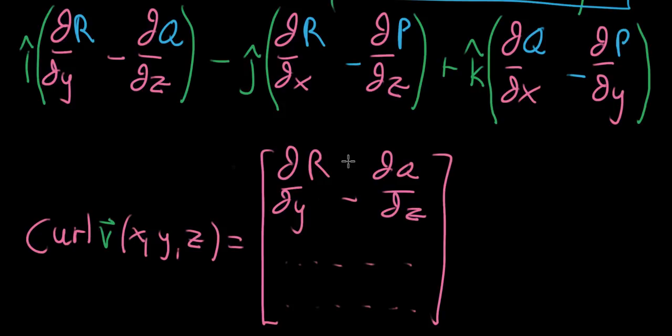One really quick thing that I want to highlight before doing an example of this is that the k component here, the z component of the output, is exactly the two-dimensional curl formula. If you look back to the videos on 2D curl and what its formula is, that is what we have here. And in fact, all the other components kind of look like mirrors of that, but you're using slightly different operators and slightly different functions.